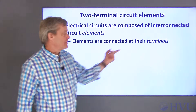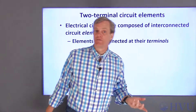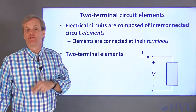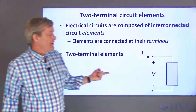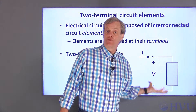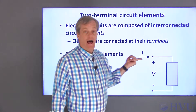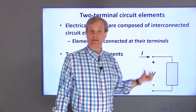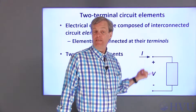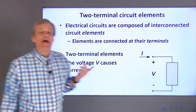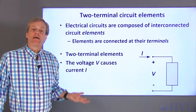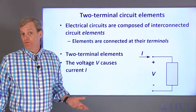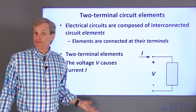These elements are interconnected at their terminals. For now, I'll only talk about circuit elements that have two terminals. This is a picture of a generic two-terminal circuit element. The current I flows into or out of the circuit element and there is some voltage difference V between the terminals. Every circuit element is mathematically described by a relationship between the voltage and the current at its terminals.